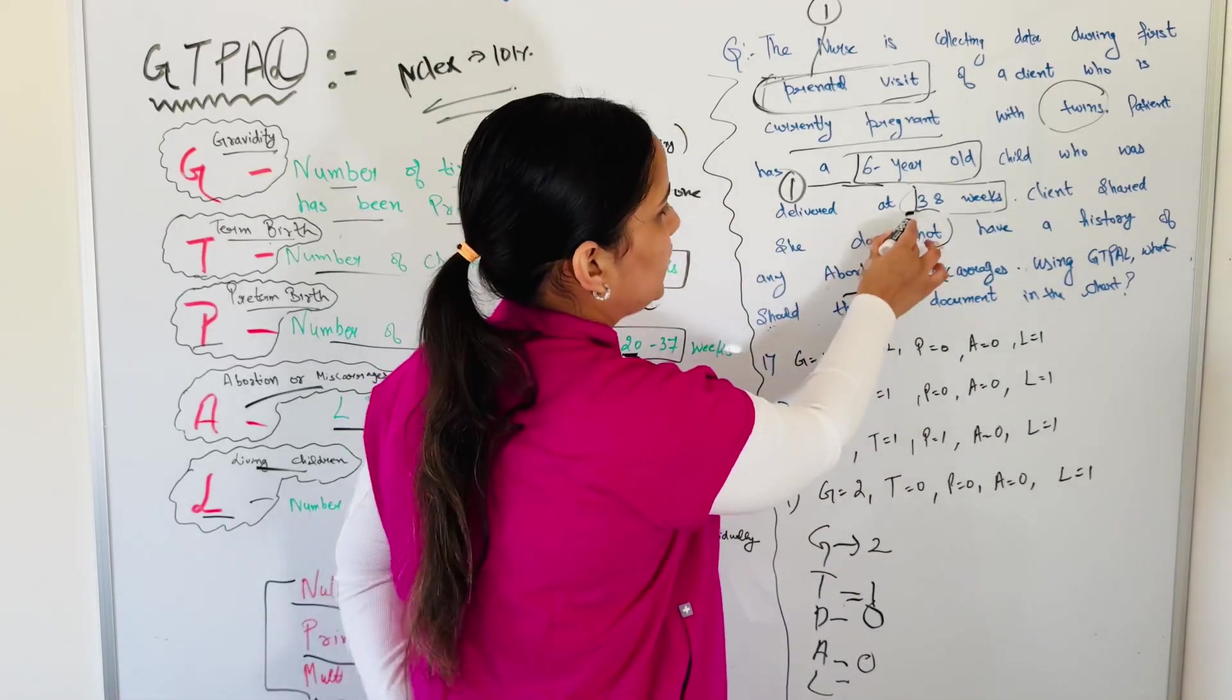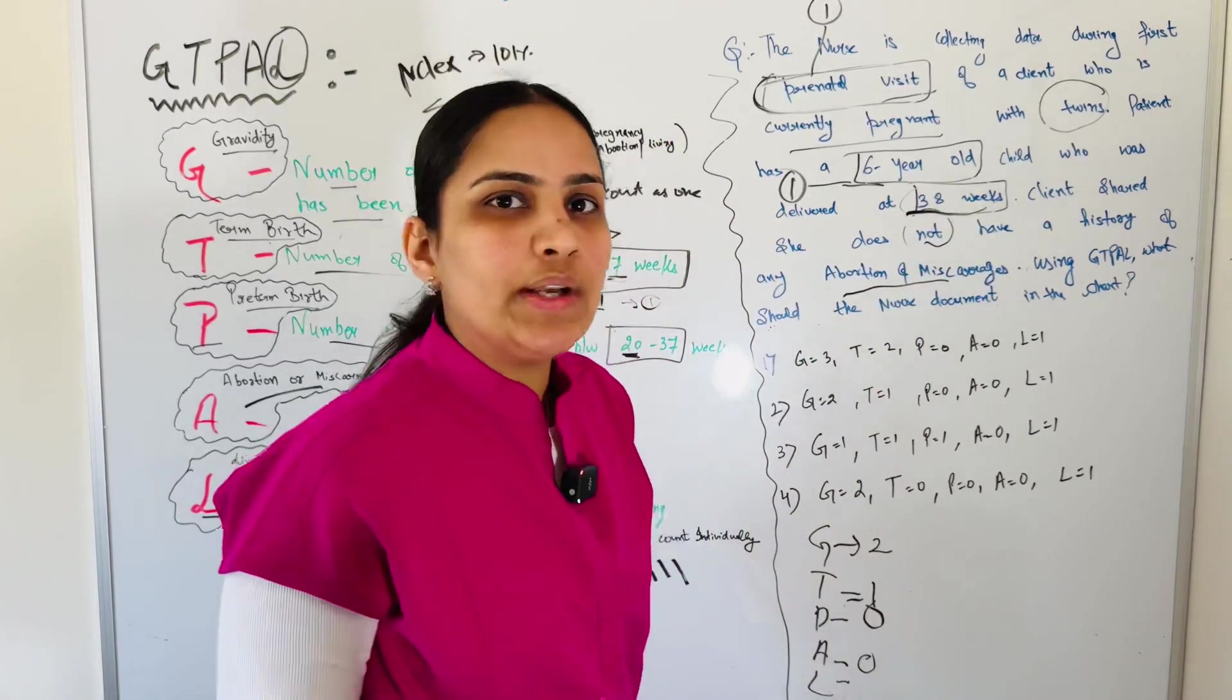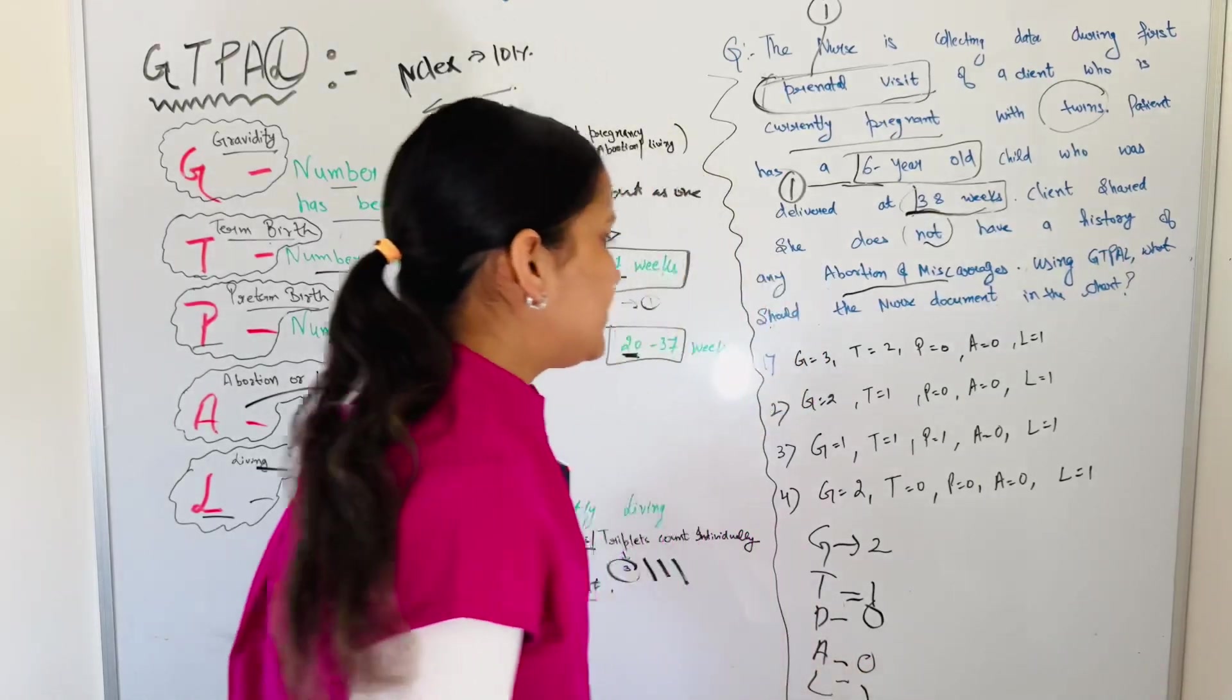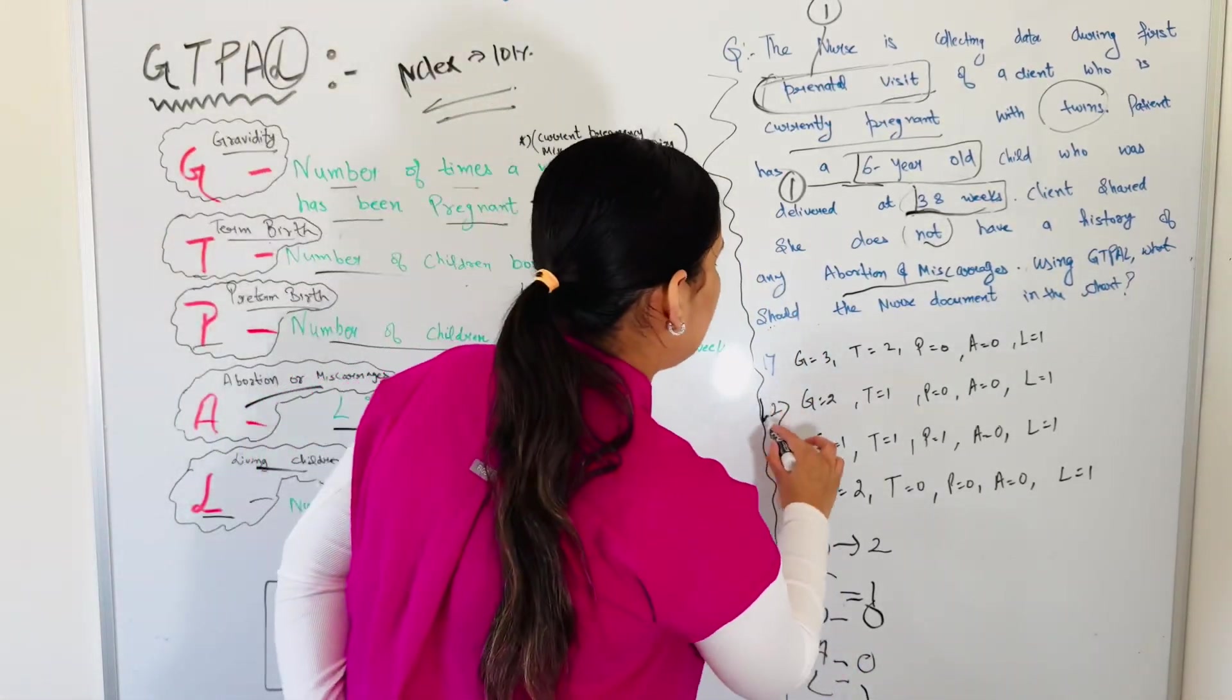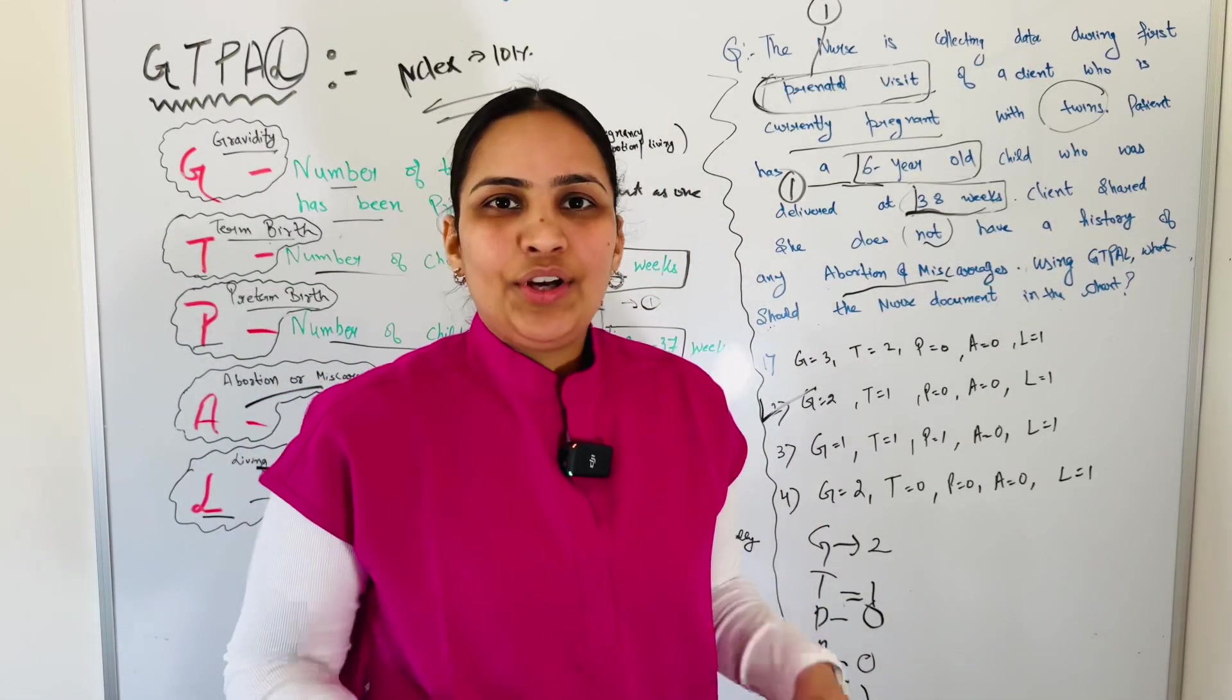L, we already know 38 weeks baby is alive. L will be 1. So what will be our answer? Our answer is 2-1-0-0-1. So hopefully this video is helpful to you. We'll see you next time.